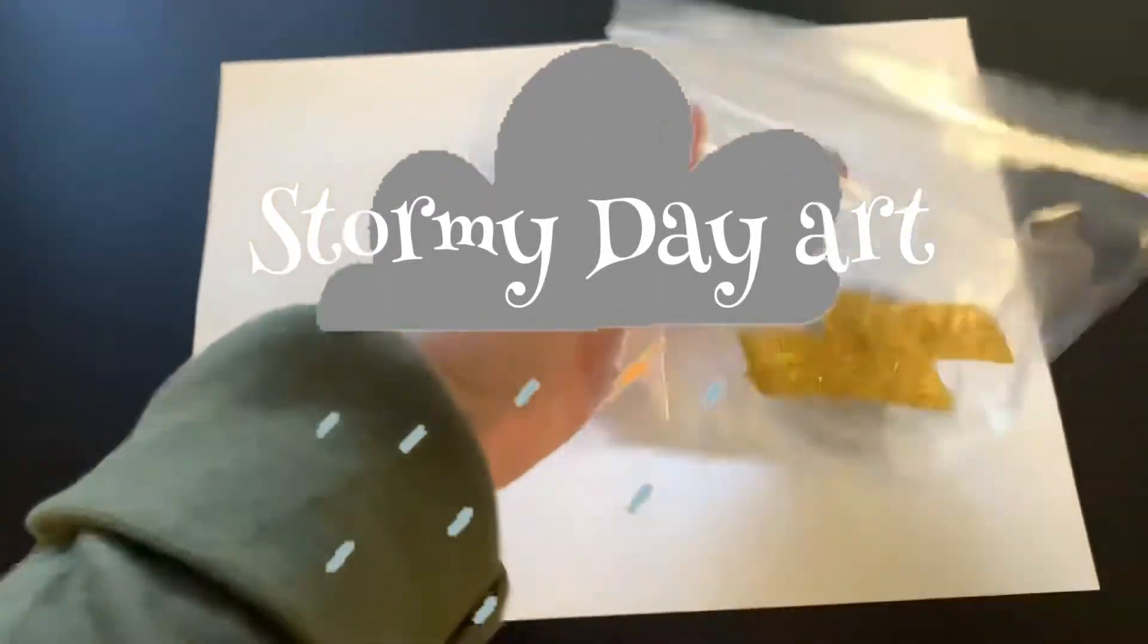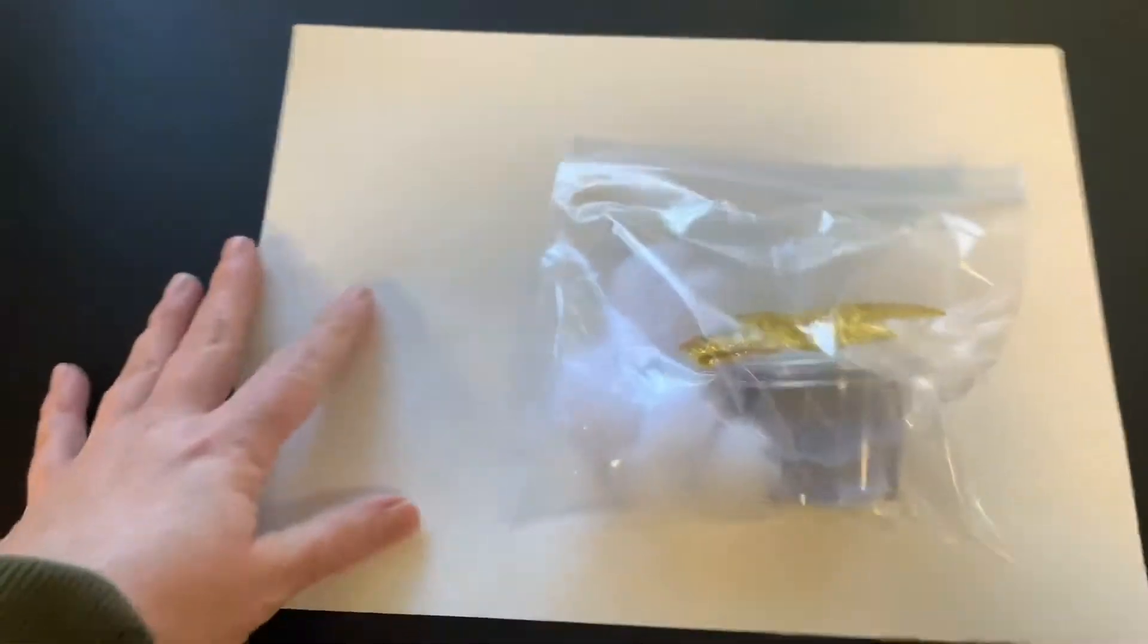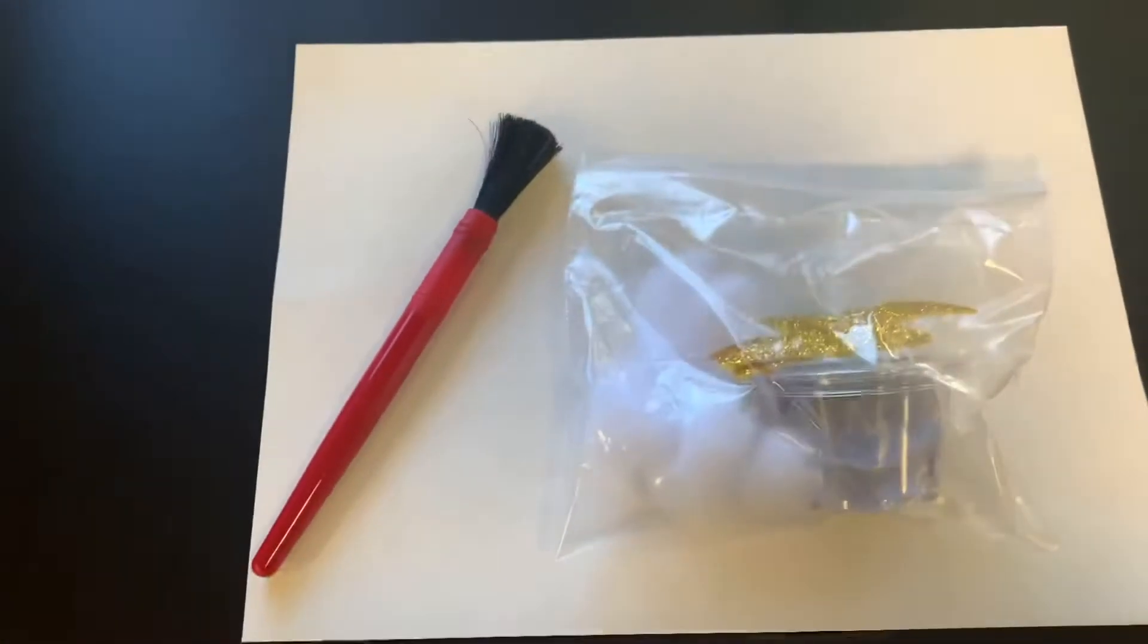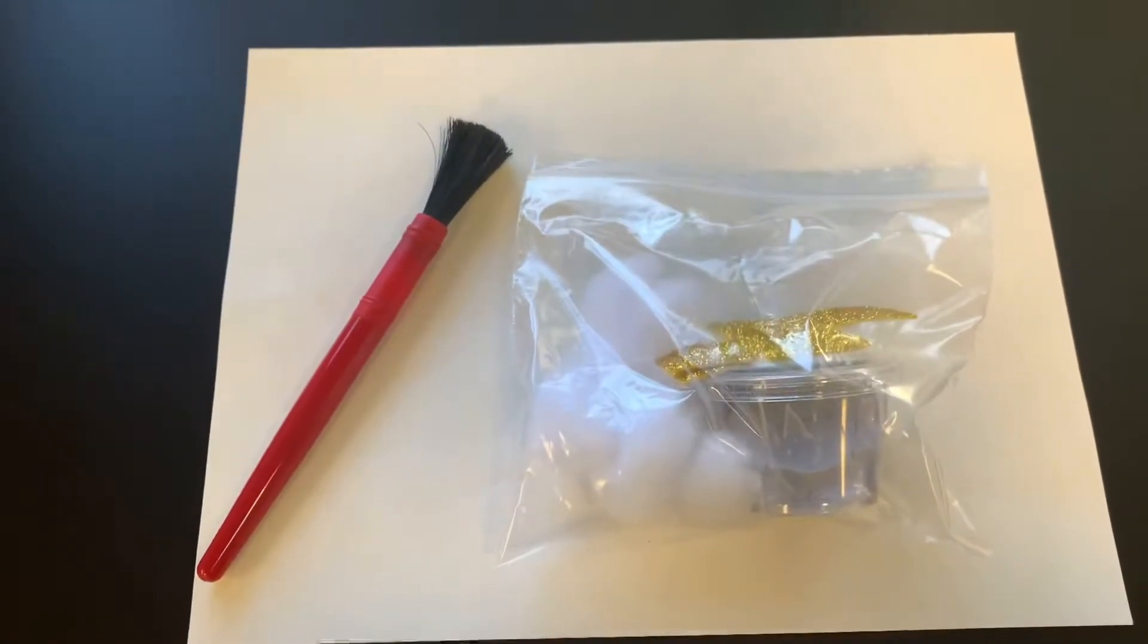We're going to make stormy day art. You have this bag in your kit and a piece of thick cardstock and you'll also need a paintbrush. Your paint may have separated so you might want to stir it.